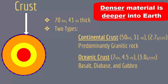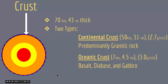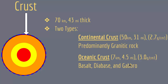Density rules when it comes to the layering of the Earth: the crust is less dense than the mantle, the mantle is less dense than the outer core, and the outer core is less dense than the inner core. The continental crust is about 50 kilometers thick with a density of about 2.7 grams per centimeter cube, and its rocks are mostly granitic. The oceanic crust is about 7 kilometers thick with a density of about 3.0 grams per centimeter cube, and its rocks are mostly basalt, diabase, and gabbro.